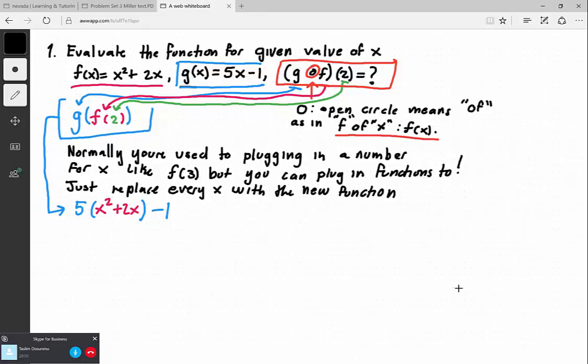Simplify, and what you end up with is a very nice looking quadratic formula: 5x squared plus 10x minus 1.